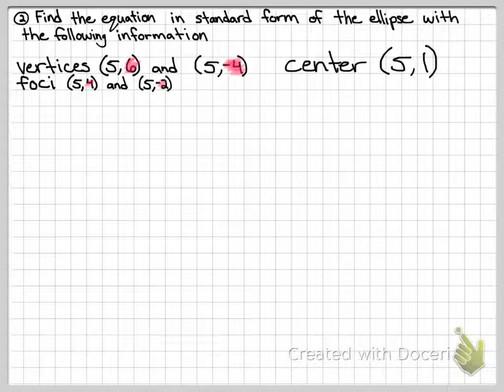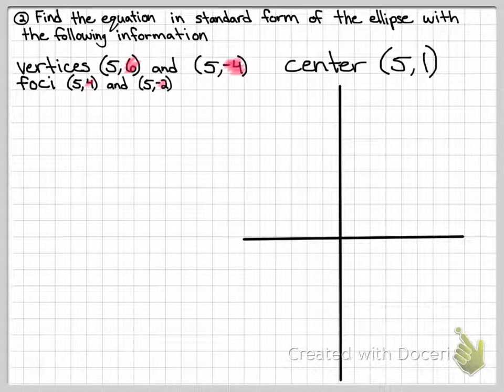So let's make a sketch of this to see what's happening. So let's plot our center, and then vertices and foci. So here's a little sketch of what I know so far. So again, there's your major axis, because it's the one the vertices and the foci are on.